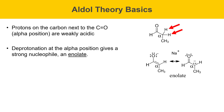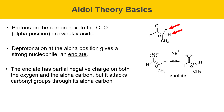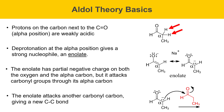Here's the structure of the enolate for propanol — it has two resonance structures. The structure on the left has the negative charge on the oxygen, and the structure on the right has it on the carbon. The left structure is more stable because it puts the negative charge on the more electronegative element. The enolate has partial negative charge on both the oxygen and the alpha carbon, but it tends to attack carbonyl groups through its alpha carbon — that's how the aldol reaction works. The enolate attacks another carbonyl carbon, giving a new C-C bond. We'll go through all of these steps in more detail on the next slides.